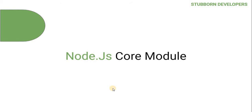Node.js core modules are basically a set of functions you want to include in your application — similar to what JavaScript was doing with libraries. Node.js has a set of built-in modules which you can use without any further installation. FS, the file system module, is one of them.